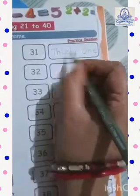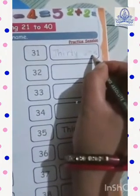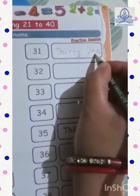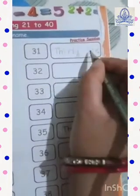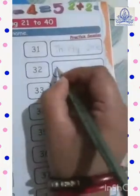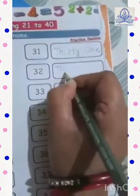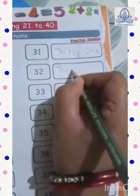We have to write the spelling of 30 here, and the spelling of 1 here. Okay? 31 — S-A-T-H-I-R-T-Y — thirty.